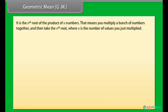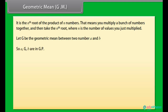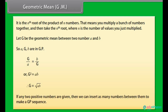Geometric Mean (GM): It is the nth root of the product of n numbers. You multiply a bunch of numbers together and then take the nth root, where n is the count of values. Let G be the geometric mean between two numbers A and B, so A, G, B are in GP. Then G/A = B/G, or G² = A×B, therefore G = √(A×B). If any two positive numbers are given, we can insert as many numbers between them to make a GP sequence.